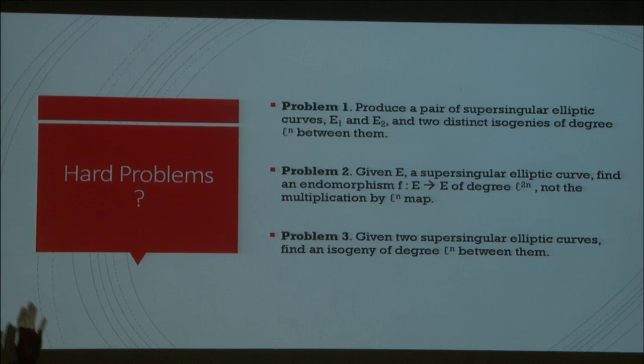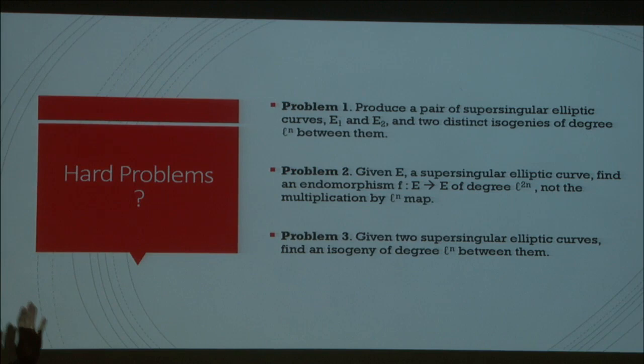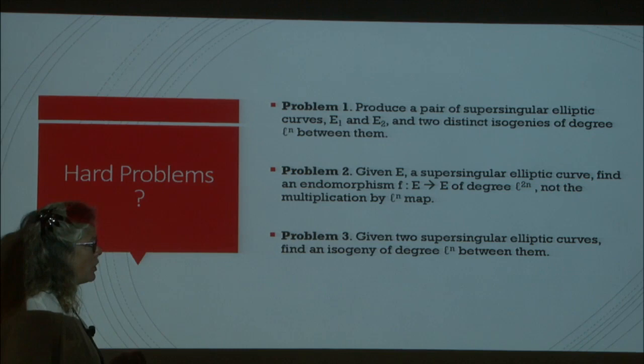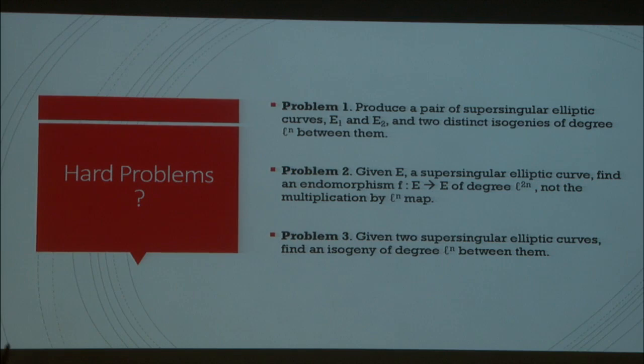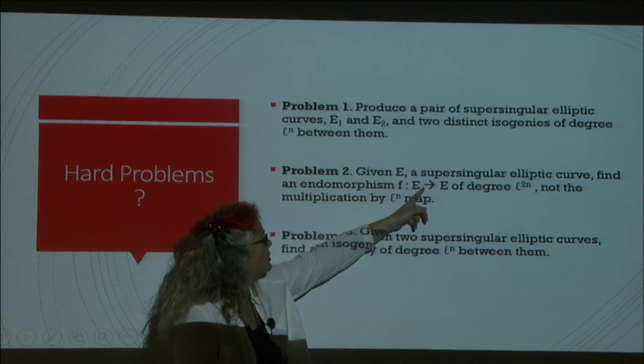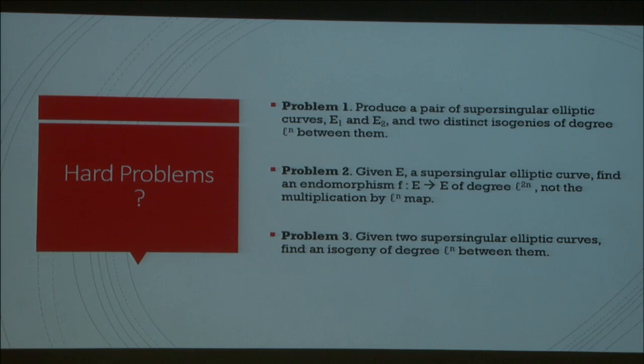This statement requires explanation. We're going to talk again and again about the endomorphism ring of an elliptic curve today. That is the collection of morphisms of the curve that also respect the group structure. When you think of endomorphisms, an endomorphism is just a map from the curve to itself, F going from E to E, respecting the group structure.